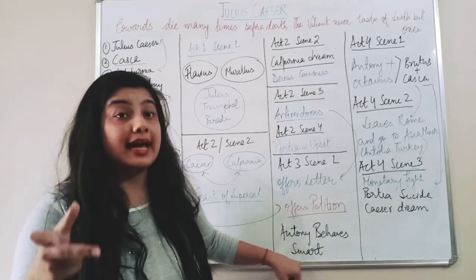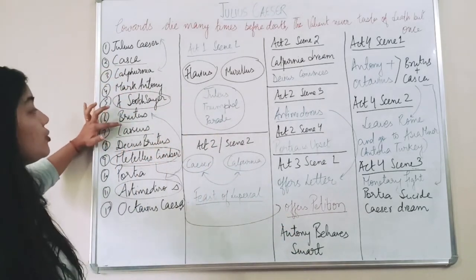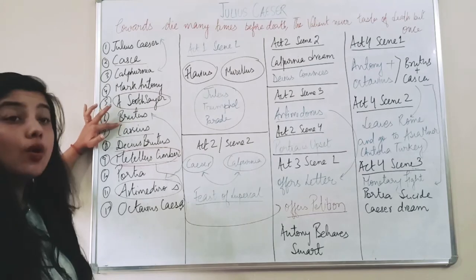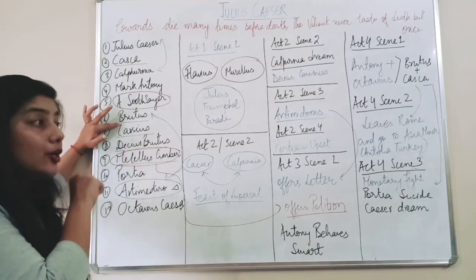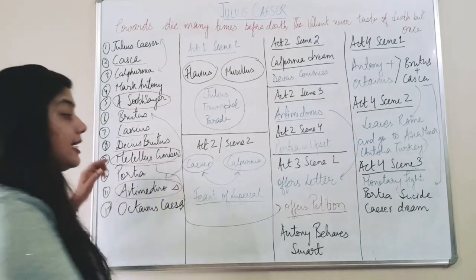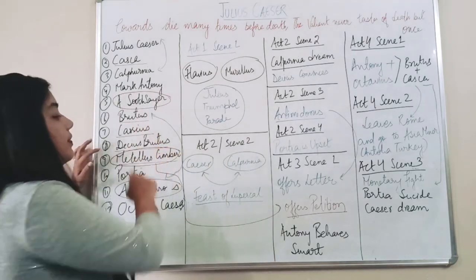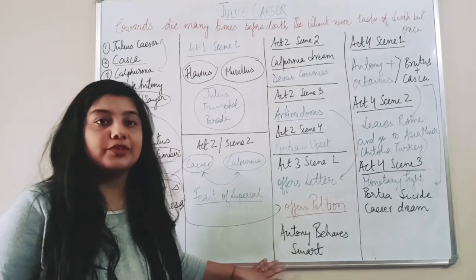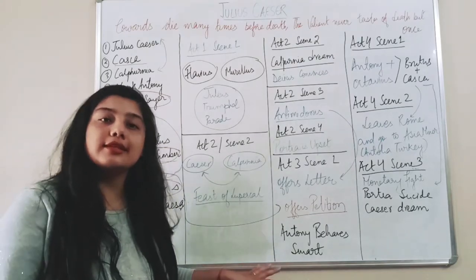Now here Antony has behaved smart. He made a plan. He told all the three, he says, he tells to Brutus that 'Brutus, you go and tell about Caesar, why you killed Caesar, then I will keep my point. I will also tell why did you kill.' He manipulated Brutus and then both of them gave the speech. The speech as I shall discuss in the next lesson.